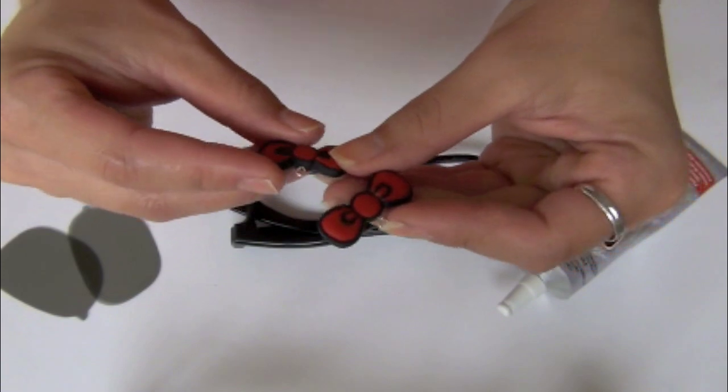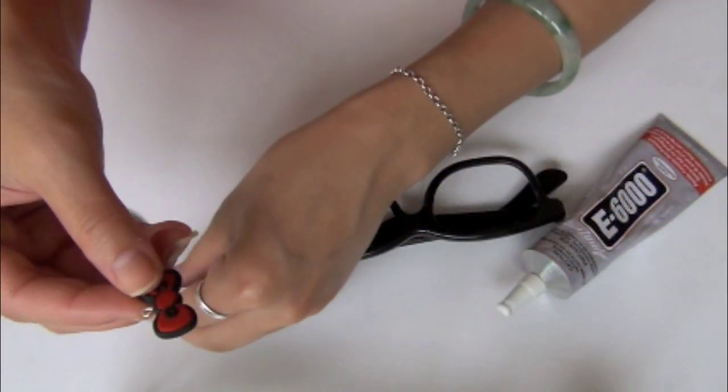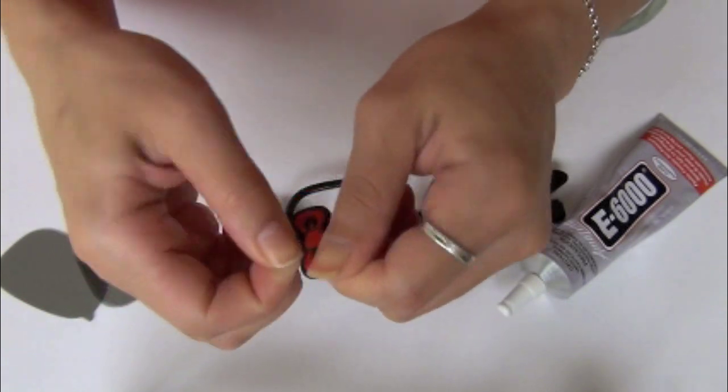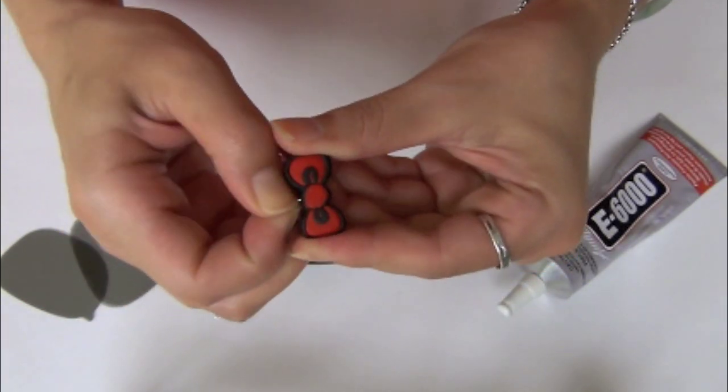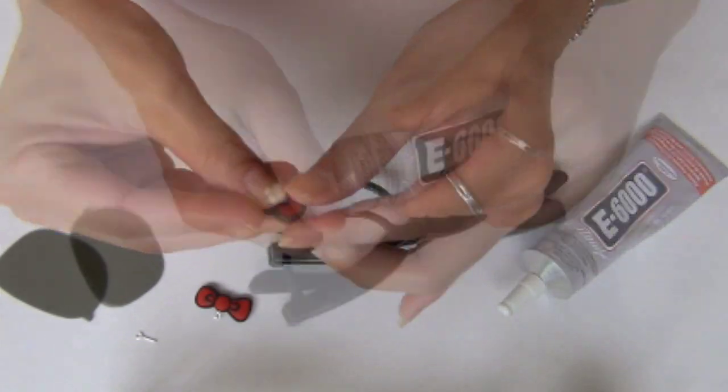I made these bows on the previous tutorial. It still had an eye pin attached to them. What I'm gonna do is gently remove the eye pin and clean up the surface a little bit.